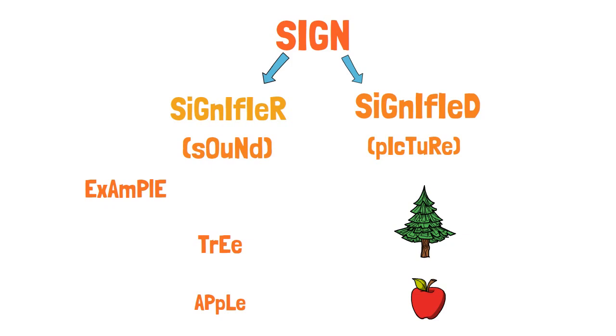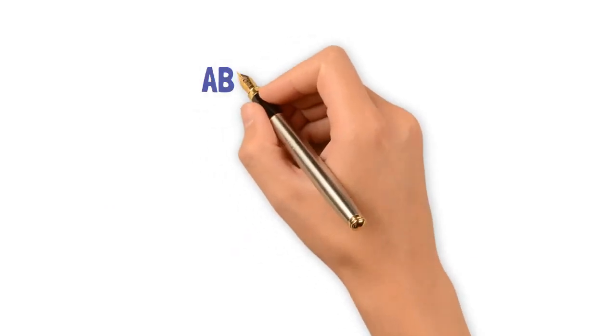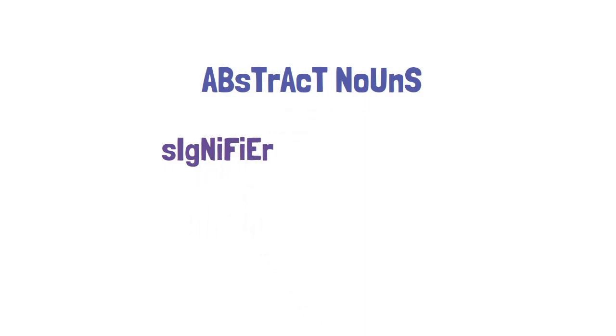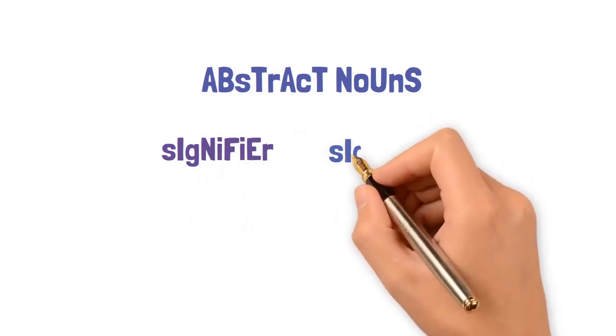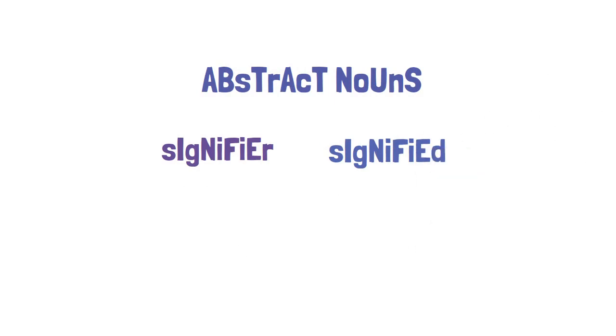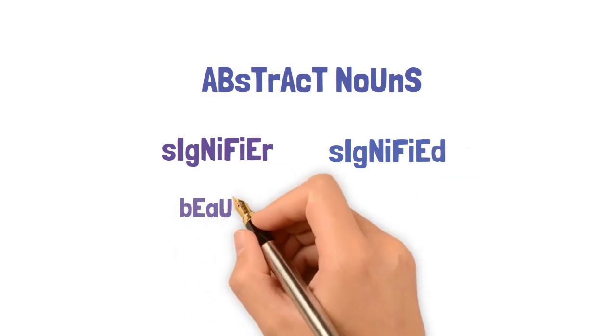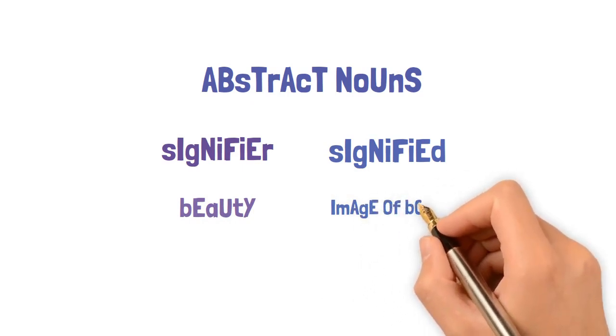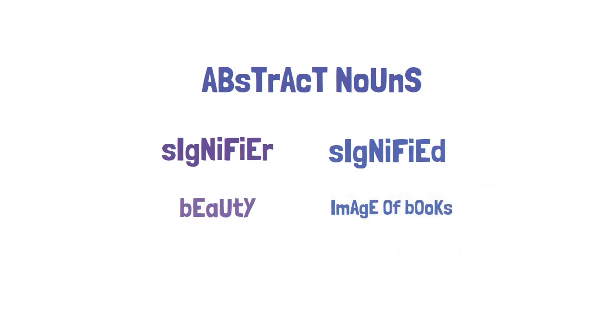For example, if I talk about the beauty, beauty is a signifier but the signified can vary from person to person. For example, if I say beauty, for me if I find beauty in the novels and the books, maybe the other person perceives beauty in different things that will be opposite to my choice.